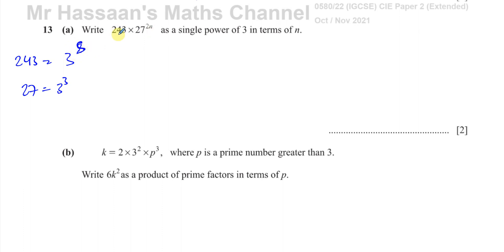So now what I can do is replace 243 with 3 to the power of 5. So I have 243 becomes 3 to the power of 5 times, and I've got 27 as 3 to the power of 3. Then simplify, this is 3 to the power of 5 times 3 to the power of 6n. Multiply the powers. And then I can combine these two. They have the same base. I can add the power. So it's 3 to the power of 5 plus 6n.